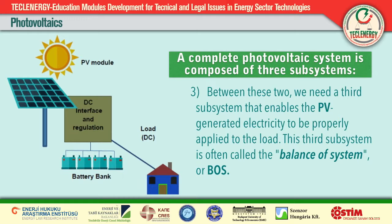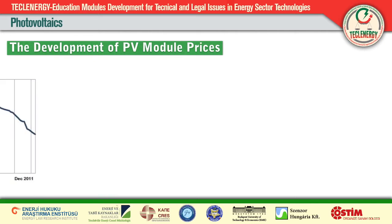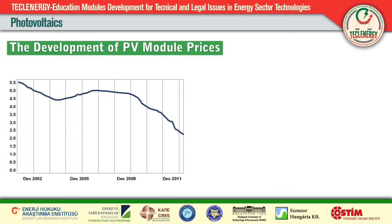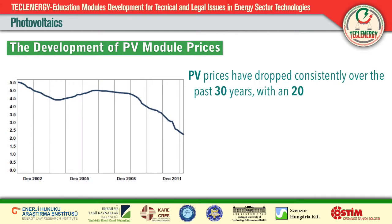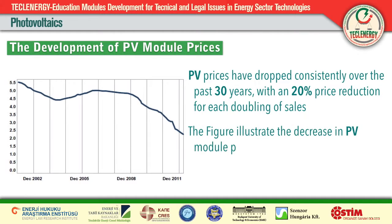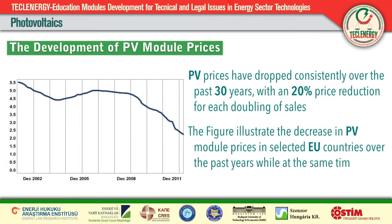Photovoltaic systems can also be an attractive option in rural areas where no grid connection is available. The investment costs of a photovoltaic system are usually measured in price per peak watt. Peak watt is defined as the power output at standard test conditions. Prices for entire photovoltaic systems vary widely and depend on a variety of factors including system size, location, grid connection, technical specification, and others.